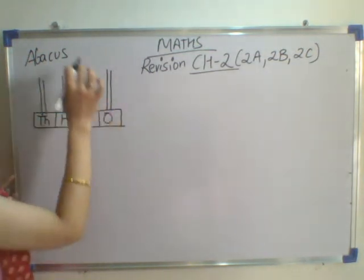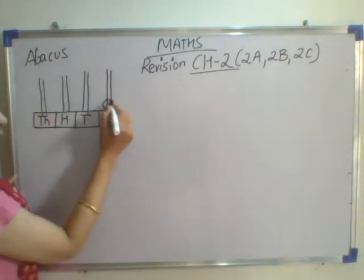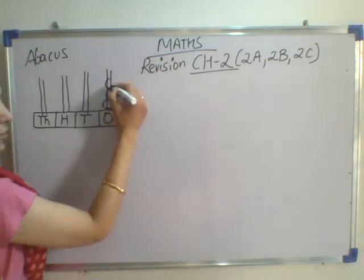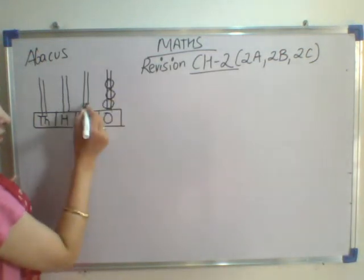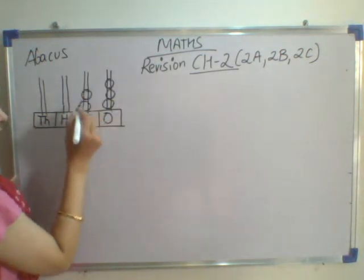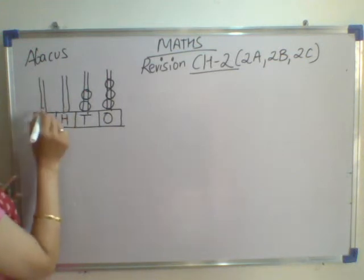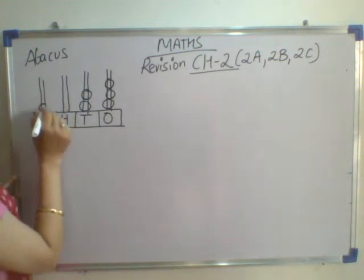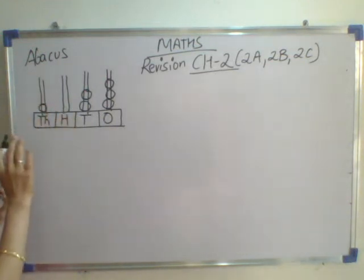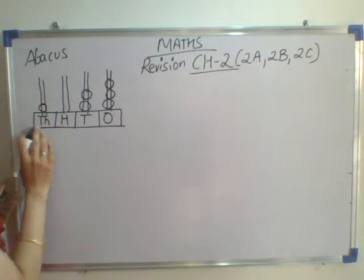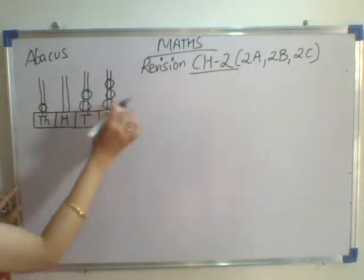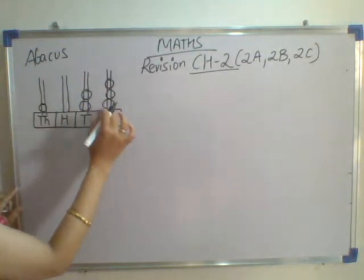Now, I will be drawing the rings. In the 1s column I am drawing 1, 2, 3 rings. In the 10s column, 2 rings. In the 100s column, no ring. And in the 1000s column, only 1 ring.